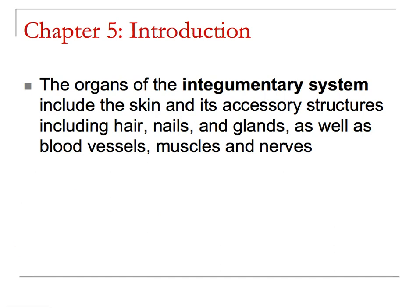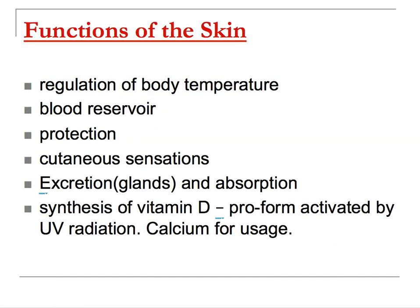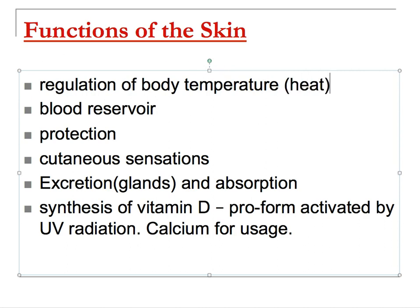So what does the skin do? It regulates body temperature — if we let blood flow to the surface of the skin, we remove heat from inside the body. The skin can be made highly vascularized, allowing blood to be stored or diverted there temporarily, and we can see the resulting change in pigmentation.